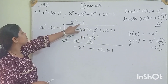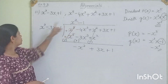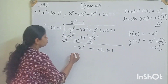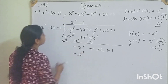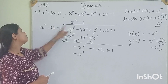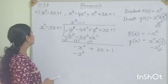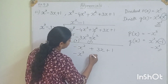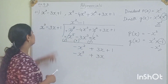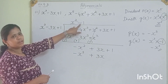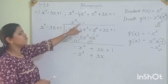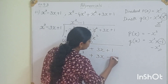Multiplying by minus 1: plus into minus is minus — x³ × 1 = minus x cubed. Minus into minus is plus — 3x × 1 = 3x, so plus 3x. Plus 1 × minus 1 = minus 1.